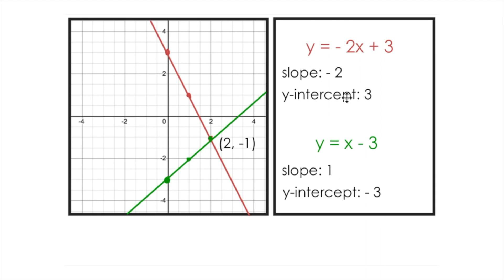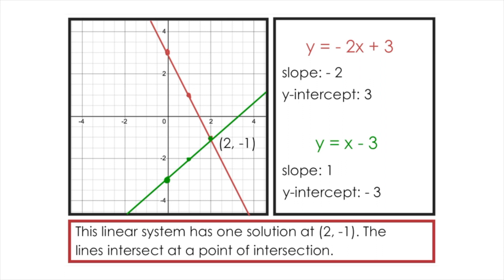These two lines intersect at a point of intersection — (2, negative 1) in this case. We could predict that just by looking at the slopes and the y-intercepts. The red line started at 3 with a slope of negative 2; the green line started at negative 3 with a slope of 1. Since they don't have the same slope, at some point these two lines have to intersect. That is a characteristic of any linear system with different slopes — the lines will intersect at a single point, giving one solution.